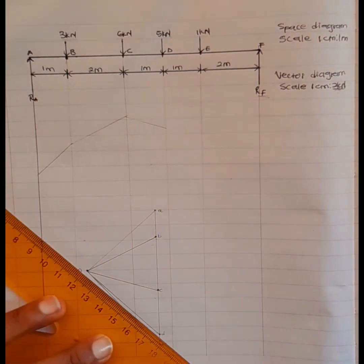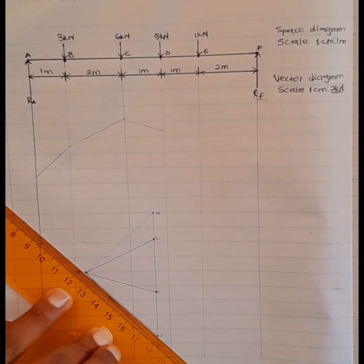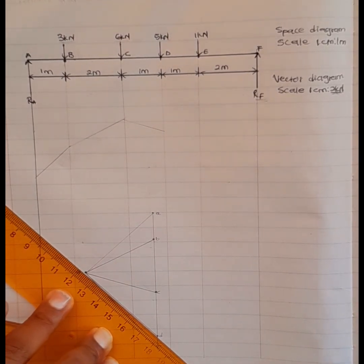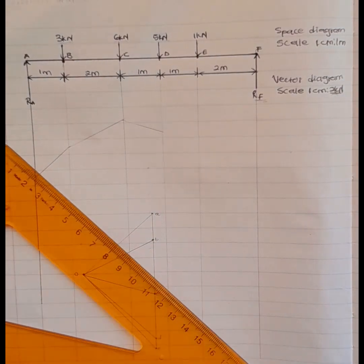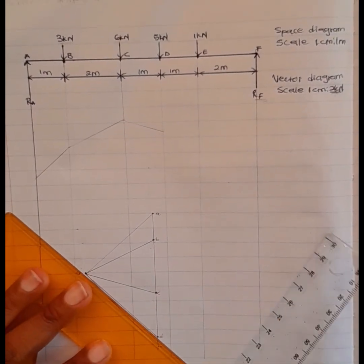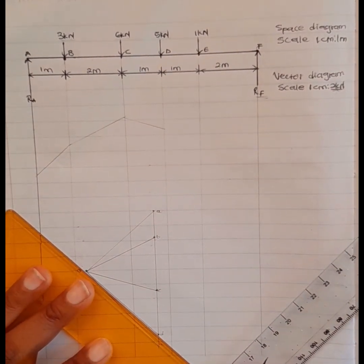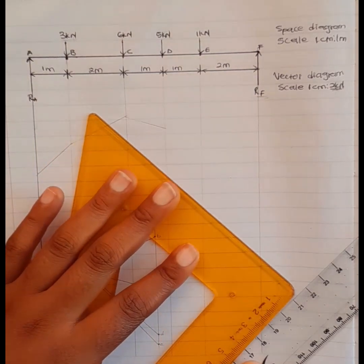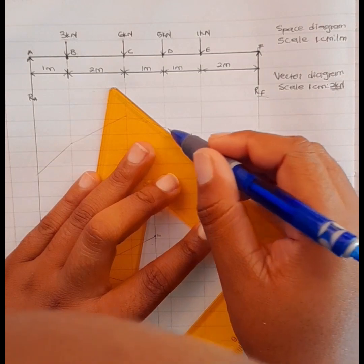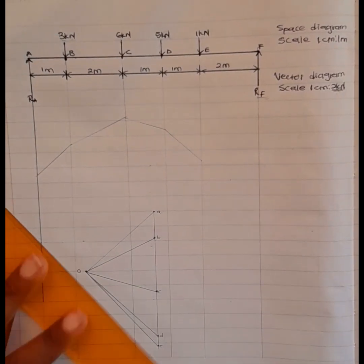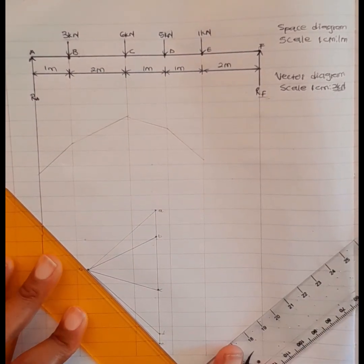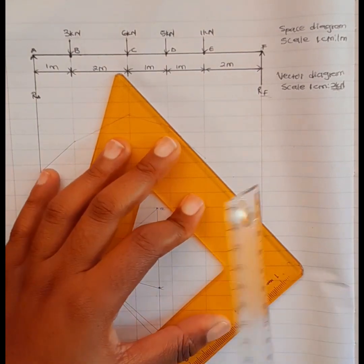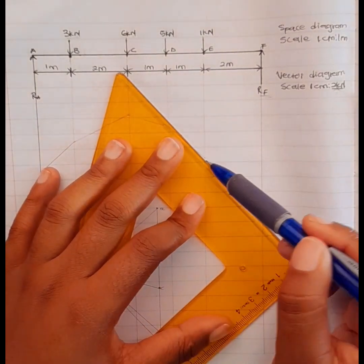We transfer line DO to the space of D, and then line EO to the space of E. There we have it — line EO is transferred.